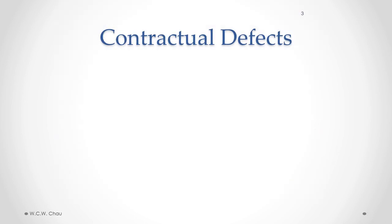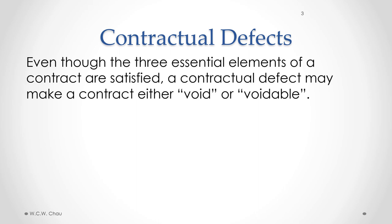We know that we need three essential elements to form a legally binding contract. Those three elements are: number one, an agreement formed by an offer and an acceptance; the second requirement is a mutual exchange of consideration; and the third is an intention to create legal relations. Even in situations where we have all three of those essential elements satisfied, there may still be something considered to be a contractual defect.